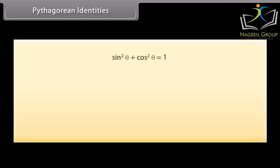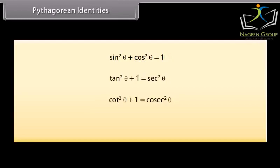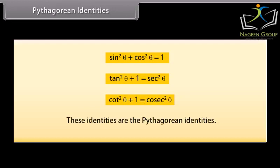Pythagorean identities — have a look at these identities: sin square theta plus cos square theta is equal to 1; tan square theta plus 1 is equal to sec square theta; cot square theta plus 1 is equal to cosec square theta. These identities are the Pythagorean identities.